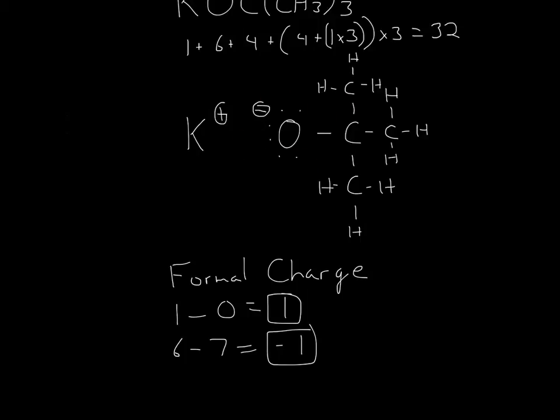Here, oxygen is in group 6, right? So we put down 6, and then we count up the electrons and then the bonds. So 1, 2, 3, 4, 5, 6, and then the bond, which will be 7. So 6 minus 7 is equal to negative 1. That's why there's a -1 charge. But that shows you that there's an ionic bond between them.